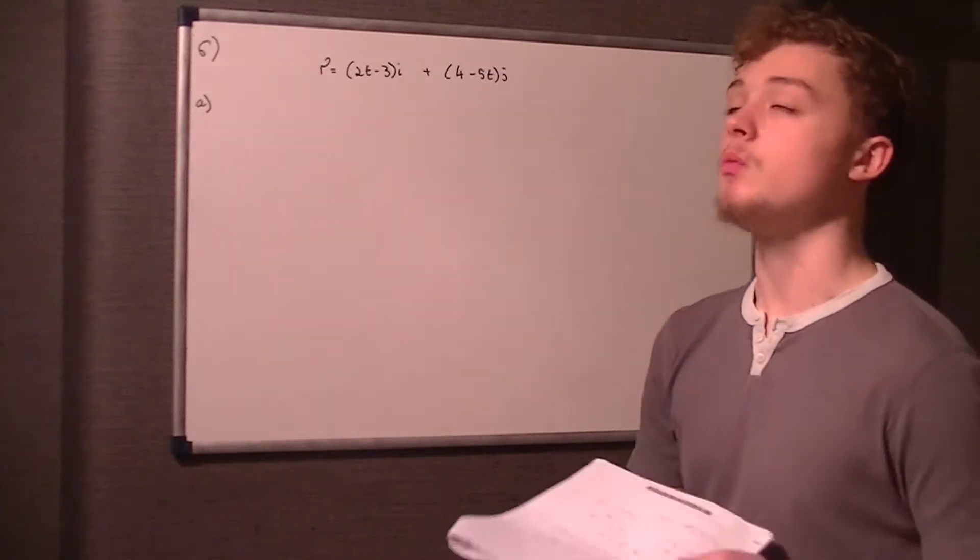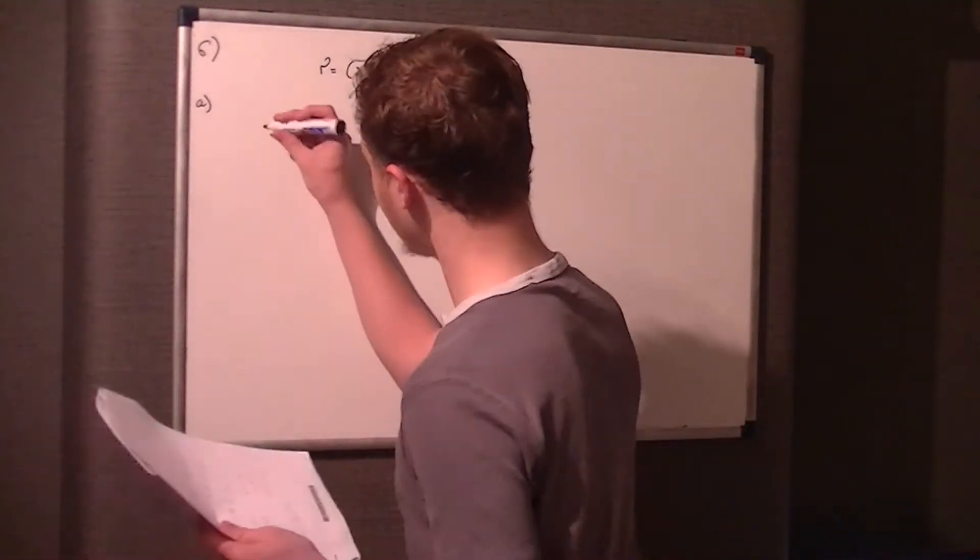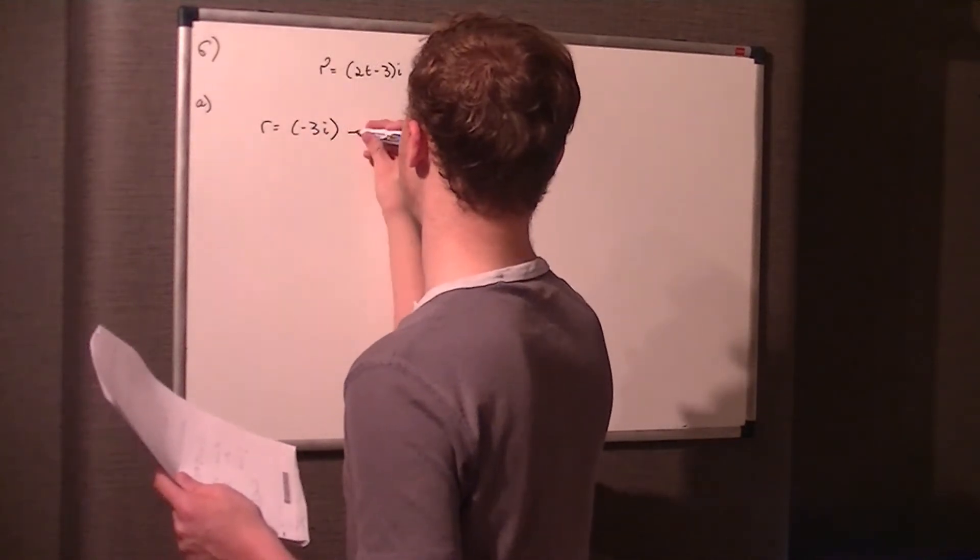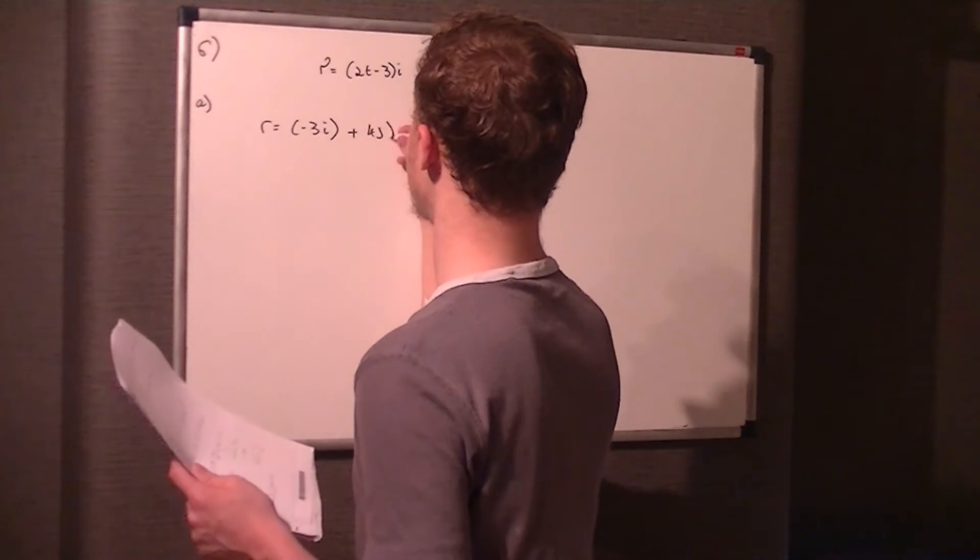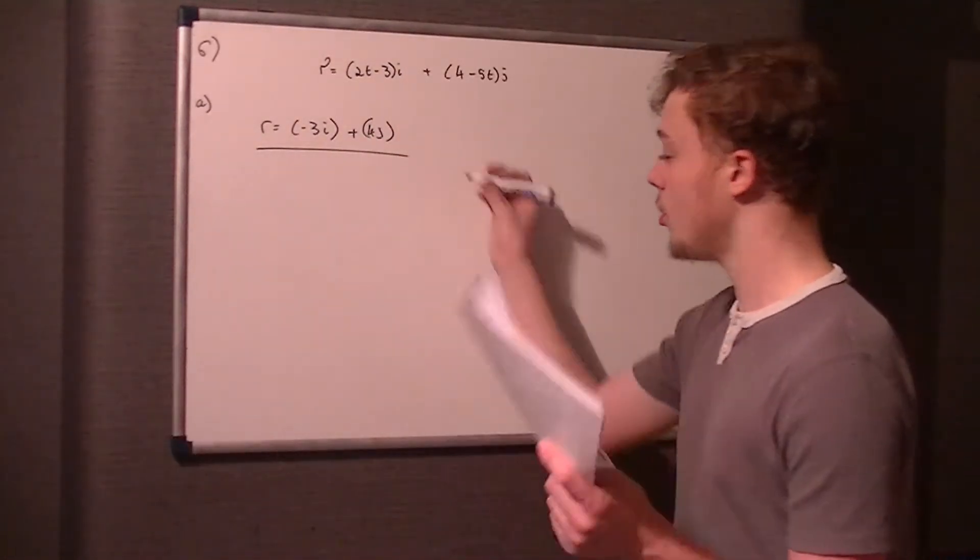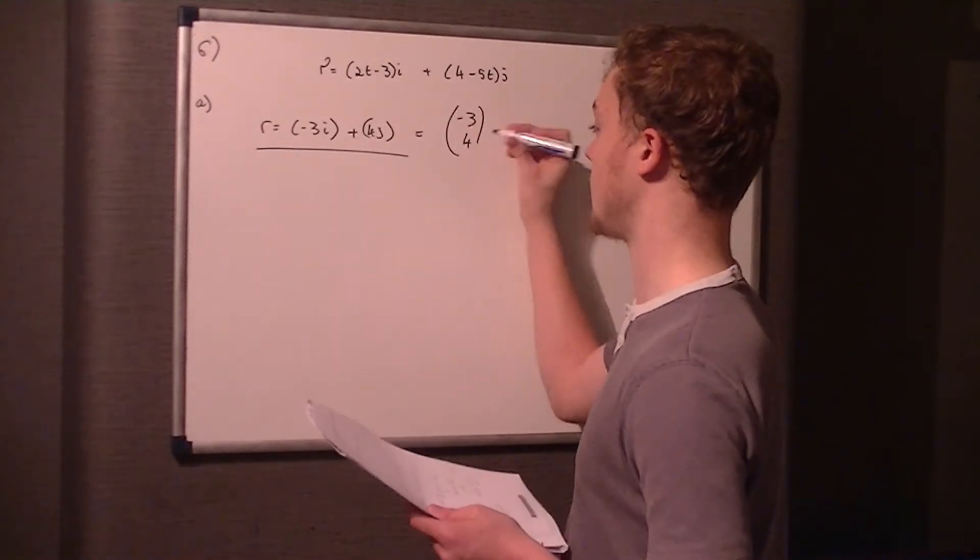So initially, obviously, initially just means when t equals 0, okay, so it's R equals -3i plus 4j, okay. So that's the initial vector, or you could write it as (-3, 4), it doesn't really matter.